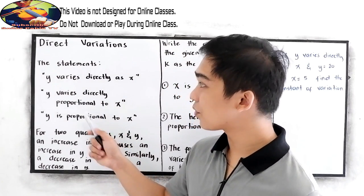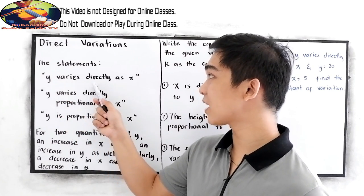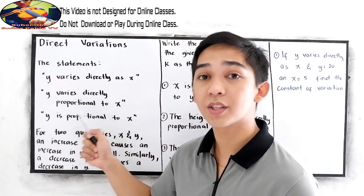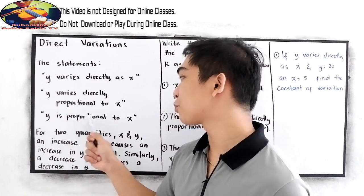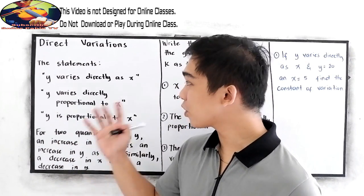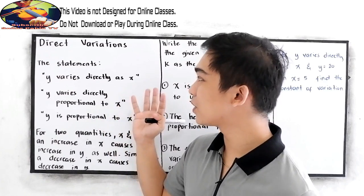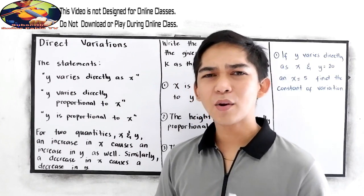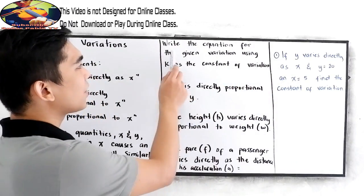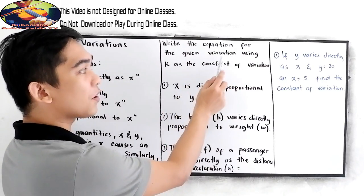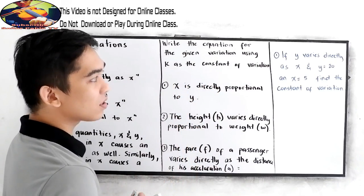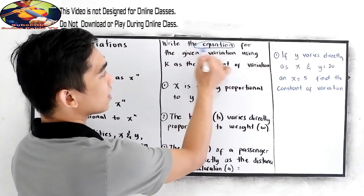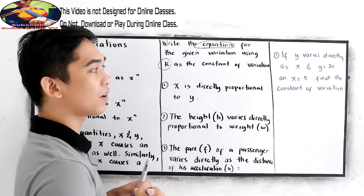The following statements you are going to encounter: 'y varies directly as x,' 'y varies directly proportional to x,' and 'y is proportional to x.' If you encounter these statements, then it falls under direct variation. Now let's have this example: write the equation for the given variation using k as the constant of variation.